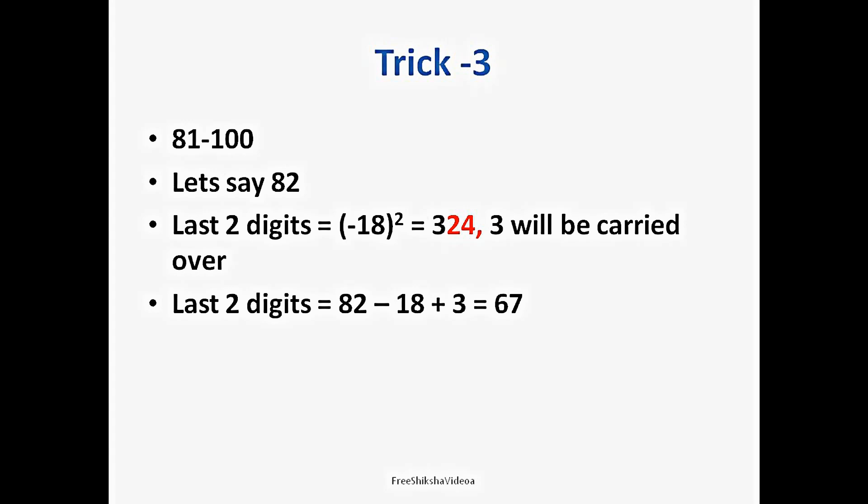24 will be the last two digits. And the first two digits will be 82 minus 18 plus 3. This time we are not taking 25. We will take whatever number square we are finding out. So 82 we have taken this time, not 25. 82 minus 18 because the number is below 100, so we have to use a minus sign. 82 minus 18 plus 3 gives us 67.